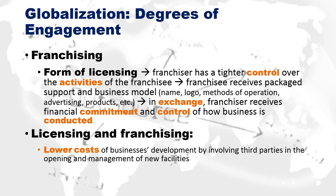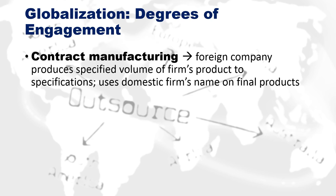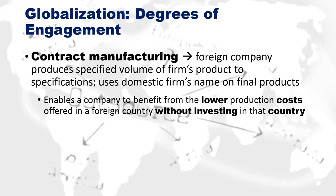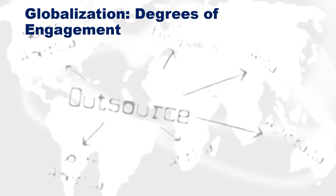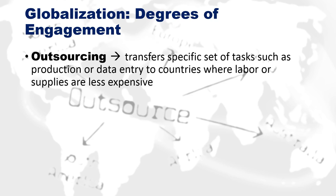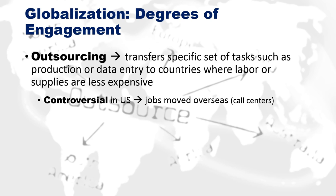Licensing and franchising both lower costs of business development by involving third parties in opening and managing new facilities. Contract manufacturing is when a foreign company produces a specified volume of a firm's product to its specs — for example, having a toy manufactured in India using a domestic firm's name on the final product. This enables a company to benefit from lower production costs in a foreign country without directly investing there.